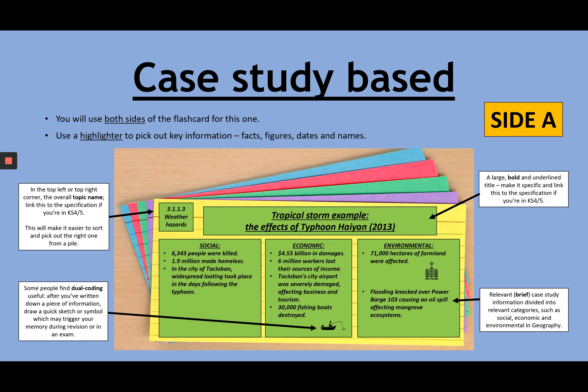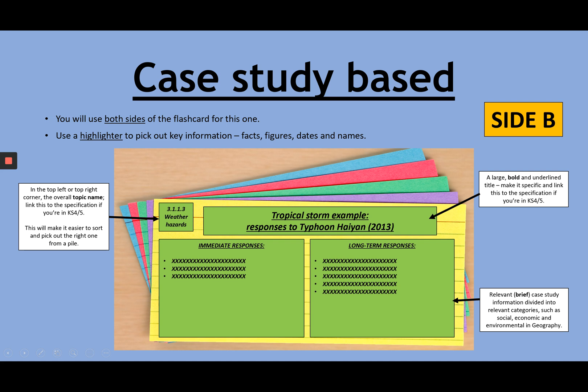Now, they may not be relevant to every single case study that you do, but then that's when you need to decide what the categories should be. So, for example, on side B, I've gone for immediate and long term, because that's what I need to know are the two types of responses in relation to a Tropical Storm, but actually also for the tectonic hazard, either an earthquake or a volcano.